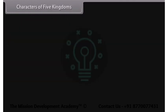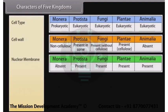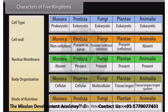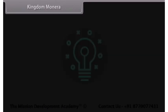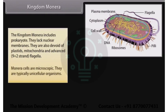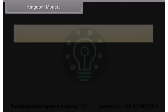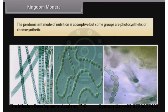The characters of the five kingdoms are distinguished by cell type, cell wall, nuclear membrane, body organization, and mode of nutrition. Kingdom Monera includes prokaryotes — they lack nuclear membranes and are also devoid of plastids, mitochondria, and advanced 9+2 strand flagella. Monera cells are microscopic and typically unicellular. The predominant mode of nutrition is absorptive, but some groups are photosynthetic or chemosynthetic.